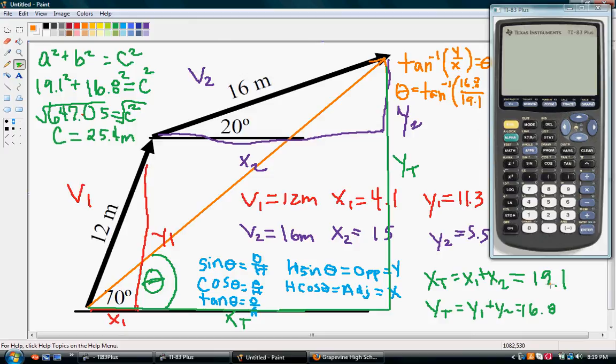Remember, right here. And so, we'll just plug that in. The inverse tangent of 16.8 over 19.1, close our parentheses, and we get 41.3. So, our theta equals 41.3 degrees.